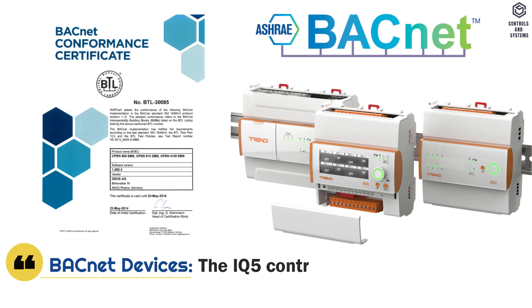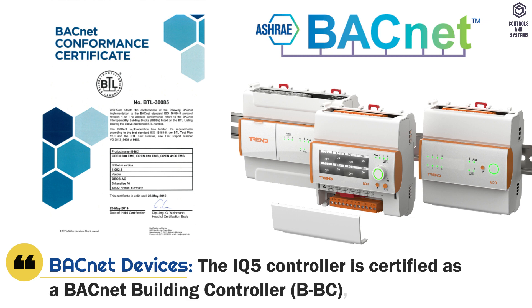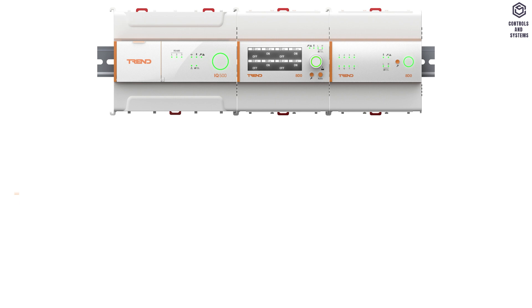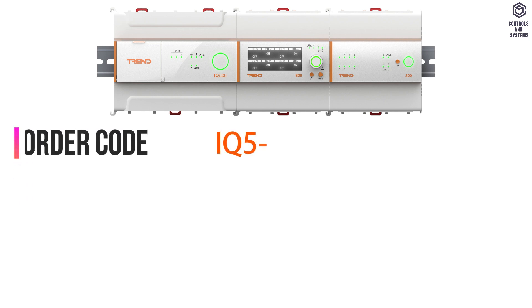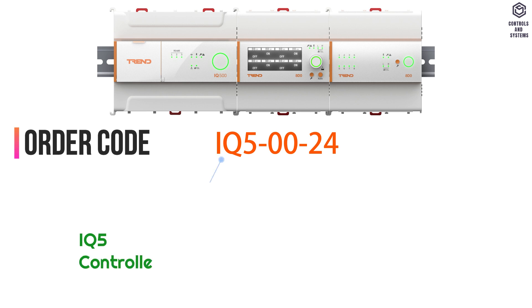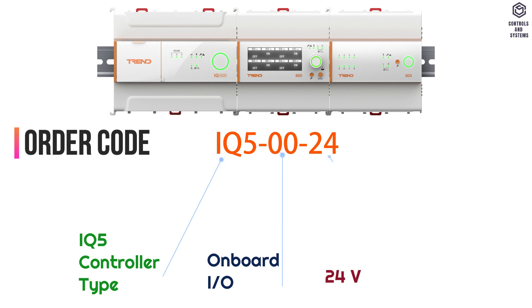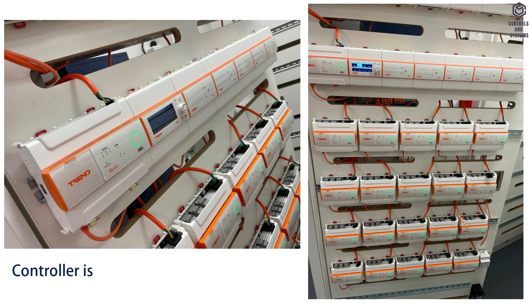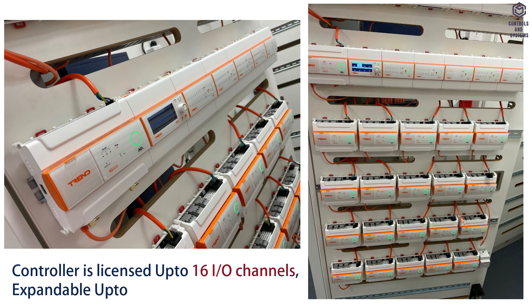BACnet Devices: the IQ5 controller is certified as a BACnet building controller. Licenses — controller order code is IQ5-00-24, where IQ5 means controller type, 00 means onboard inputs and outputs, and 24 means controller power supply. The controller is licensed up to 16 inputs and outputs channels and is expandable up to 500 inputs and outputs channels.